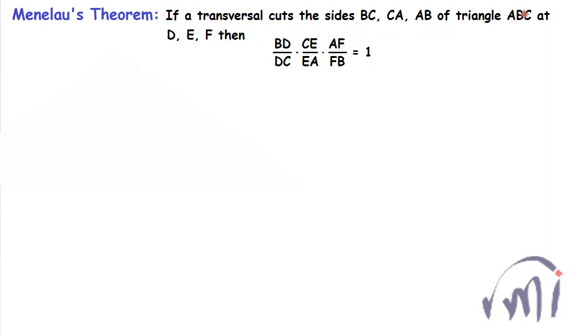CA, AB of triangle ABC at D, E, and F, then BD divided by DC multiplied by CE divided by EA multiplied by AF divided by FB is equal to 1, and this result is in magnitude.